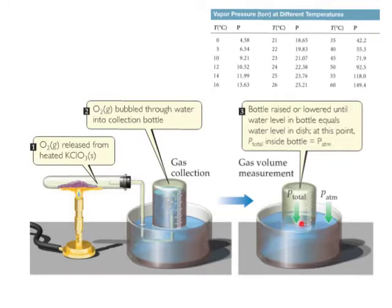plus whatever the partial pressure of the water vapor is. Whenever there's some liquid water, there's always some water vapor above it, and we're going to use this information — the vapor pressure of water at different temperatures — in order to figure out how much of the total pressure is due to the vapor pressure of the water.